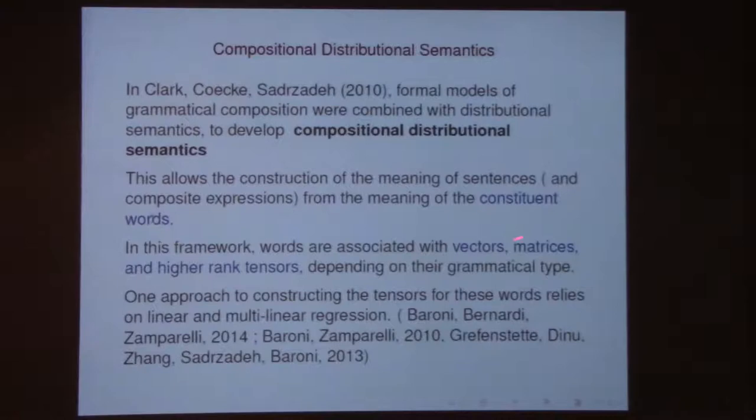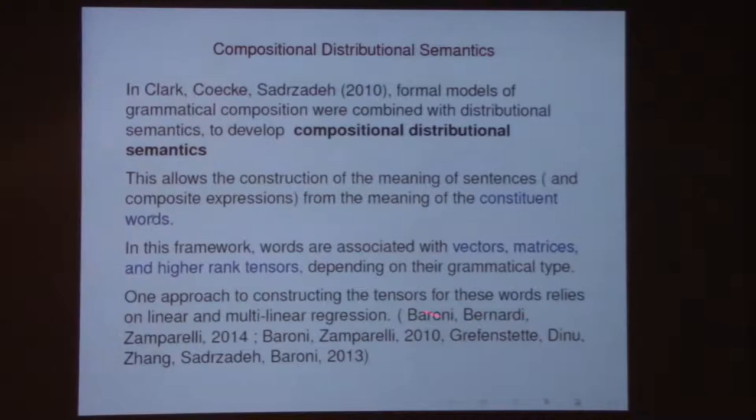A good way to do that, in the framework they proposed, was to use the kinds of composition that exist in the world of vectors, matrices, and higher rank tensors. Therefore, rather than just associating vectors to words, one should also associate matrices and higher rank tensors to different kinds of words depending on their grammatical role. Some of the approaches they proposed include how to construct these matrices — one of them was based on linear multilinear regression.